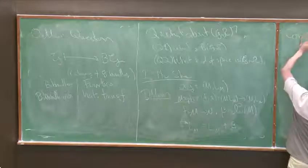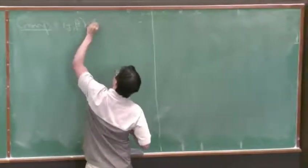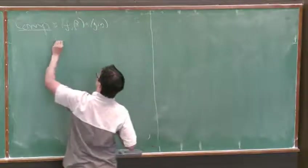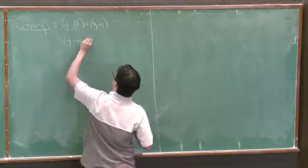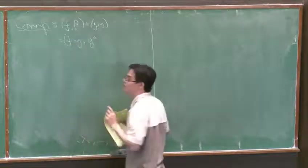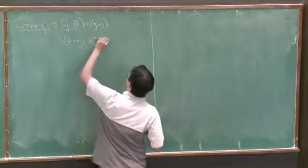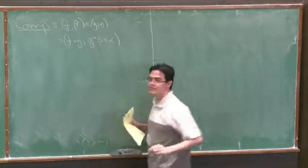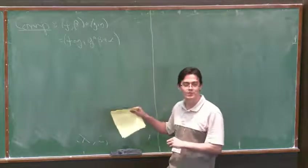So the composition is kind of really the only thing you can do. So this is going to be, well, in the first component, it's going to be F composed of G. And then in the second component, we're going to have to put a two-form on the domain of G. So we just pull back beta and we add alpha. So this is kind of like a semi-direct product of smooth maps with two-forms.